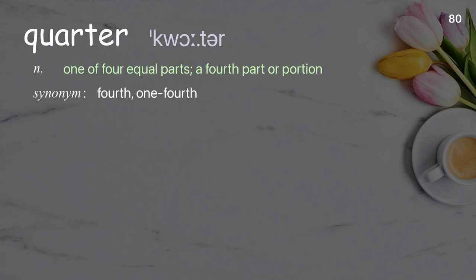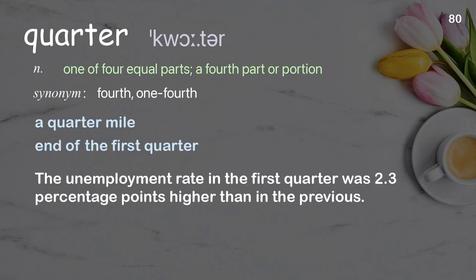Quarter: One of four equal parts; a fourth part or portion. Examples: A quarter mile, end of the first quarter. The unemployment rate in the first quarter was 2.3 percentage points higher than in the previous quarter.